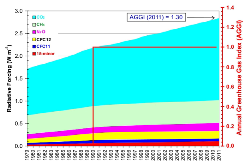At current emission rates, temperatures could increase by 2 degrees Celsius, which the United Nations IPCC designated as the upper limit to avoid dangerous levels, by 2036.